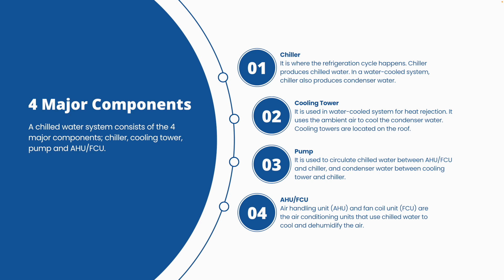Chilled water is low-temperature water, usually around 5 to 7 degrees Celsius. There are many types of chillers, which will be covered in a dedicated chapter. In a water-cooled system, the chiller also produces condenser water for heat rejection. That brings us to the second component — the cooling tower. Condenser water goes to the cooling tower, which uses its fan to bring in ambient air and cool down the condenser water. The cooling tower is the large unit you can see located on the roof.